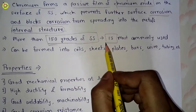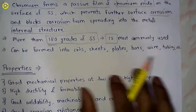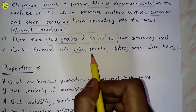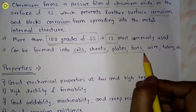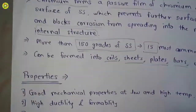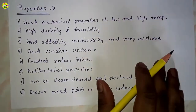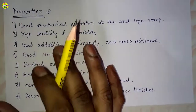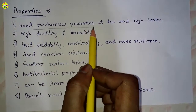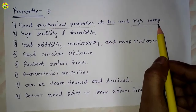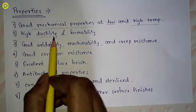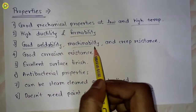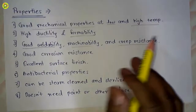Stainless steel can be formed into coils, sheets, plates, bars, wires, tubing, and so on. Properties of stainless steel include good mechanical properties at low and high temperatures, high ductility and formability, good weldability, machinability, and creep resistance.